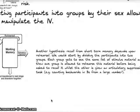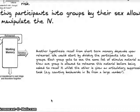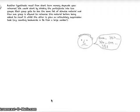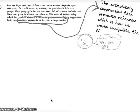Another hypothesis: recall from short-term memory depends upon rehearsal — that business of saying things back over to yourself. We'd divide participants into two groups; each sees the same list of stimulus material. One group is allowed to rehearse before being asked to recall it, while the other is given an articulatory suppression task — like saying a word over and over, or the classic Brown-Peterson technique of counting backwards in threes from a large number. The articulatory suppression task prevents rehearsal, and that's how we manipulate the IV. In the first example with sex and risk, we manipulated the IV through sampling; here we manipulate it through instrumental procedures.